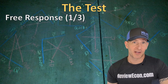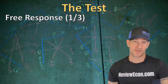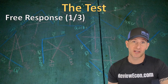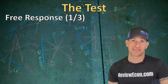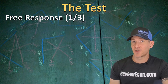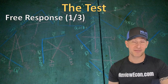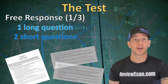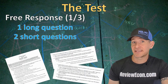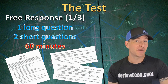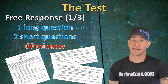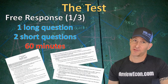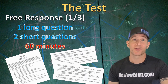The second part of the exam is the free response portion, which is one-third of your overall score. For the AP Economics Exams, there is no essay — these are free response questions where you just answer the question as asked. There are three FRQs on both the micro and macro exams. The first is a long question and the second two are short questions. You have 60 minutes total — spend about 30 minutes on the first question and 15 minutes each on the second two.